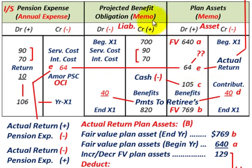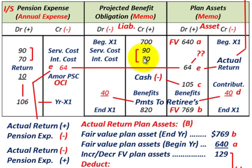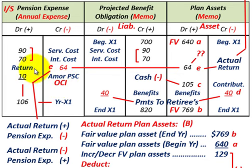What isn't included in the plan assets: moving over to our pension expense account, we have our service cost and interest costs, which increase pension expense, and the projected benefit obligation — the liability — for that service cost and interest cost. Also, amortization of pension expense is increased by whatever you're amortizing of your projected service cost on your pension plan, which would go to other comprehensive income. Just remember: a positive return on plan assets reduces your pension expense; a negative return increases it.